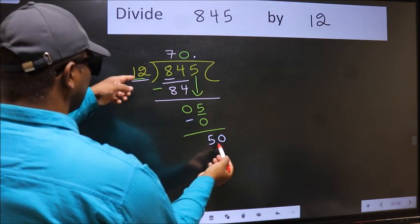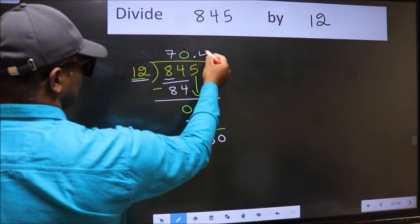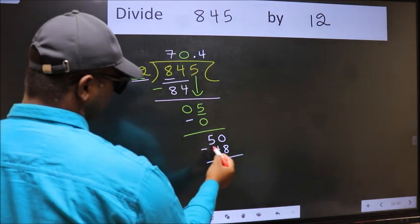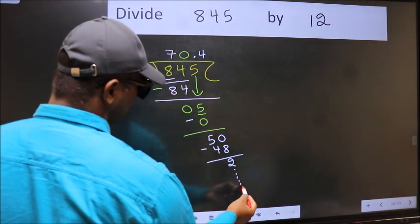A number close to 50 in the 12 table is 12 fours 48. Now you should subtract, you get 2, and continue the division.